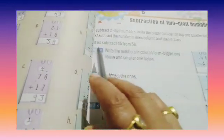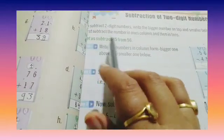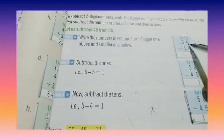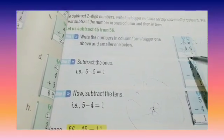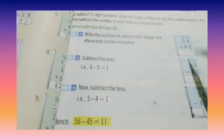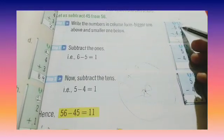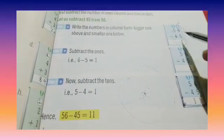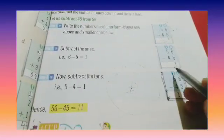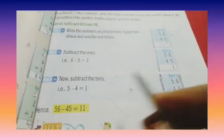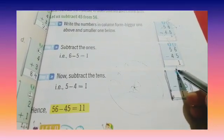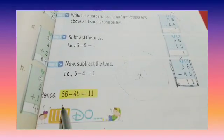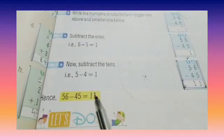So the subtraction example, let us subtract 45 from 56. First we have arranged 56 minus 45 in the column of one's and tenths. Then starting from the right hand side, we subtract the digit at the one's place. 6 minus 5, so the answer is 1. Now we will subtract the digit at the tenths place, 5 minus 4. So 5 minus 4 is 1. So the answer is 56 minus 45 equals 11.